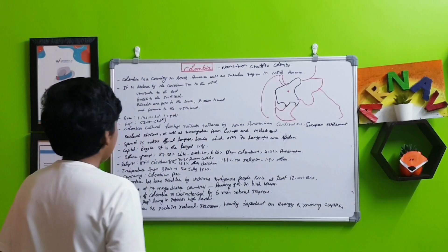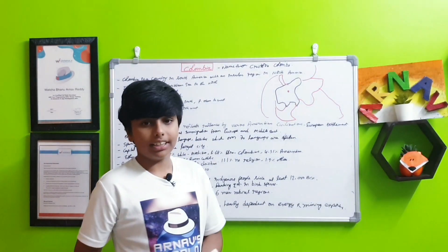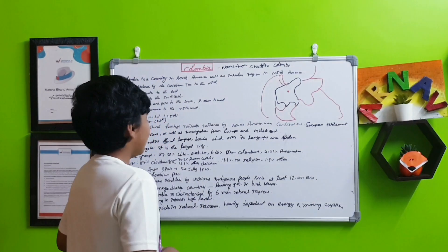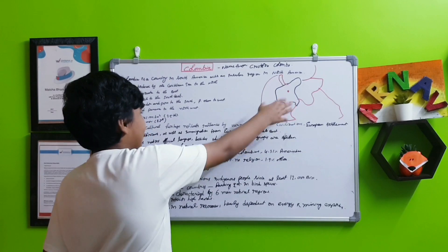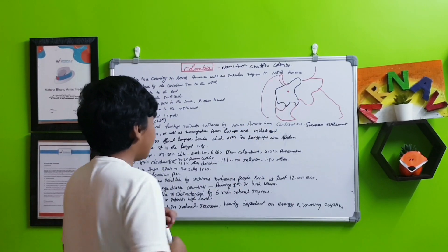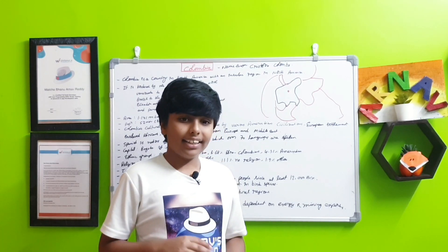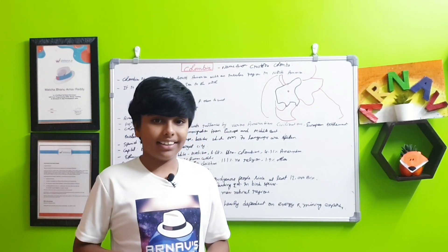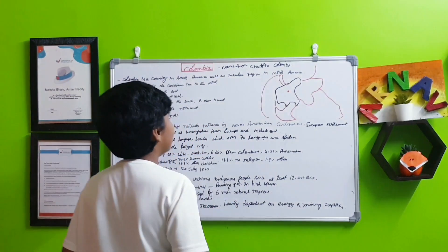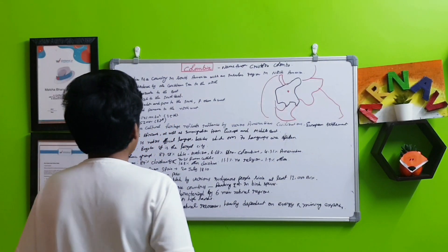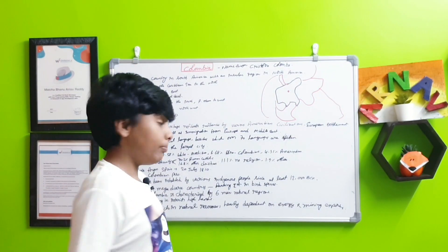It got independence from Spain on 20th July 1810. Many Spanish countries in this overall region got their independence from 1800 to 1850. At that time, many countries got independence from Spain in the Americas.